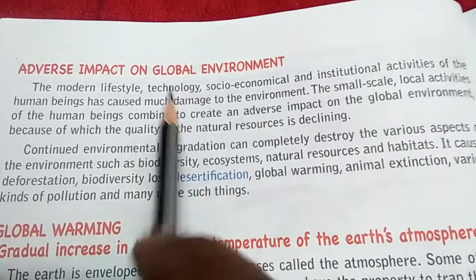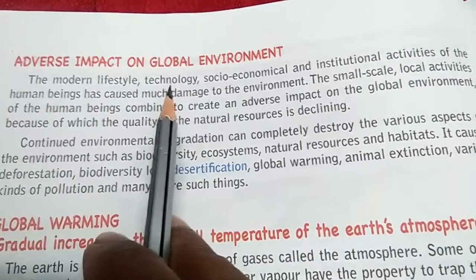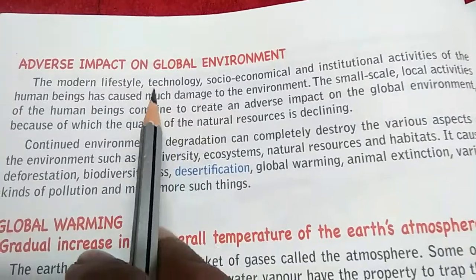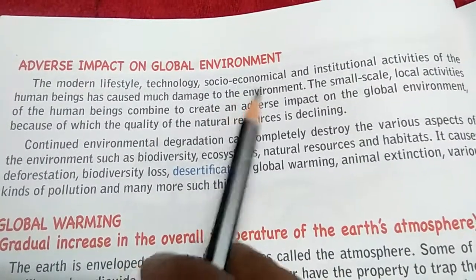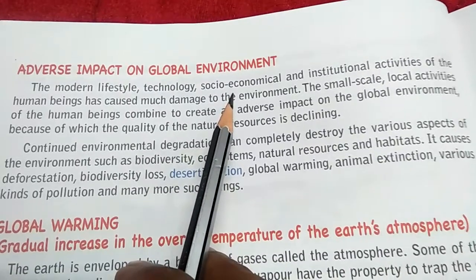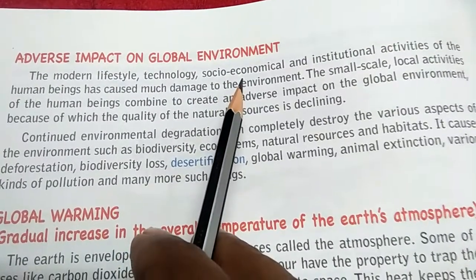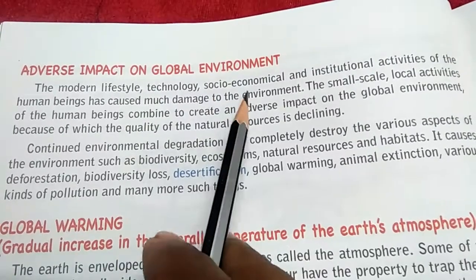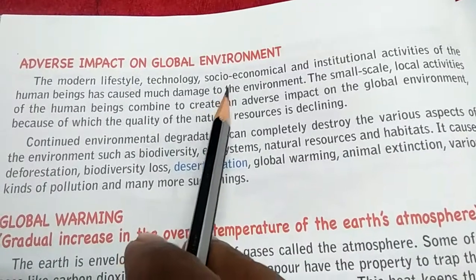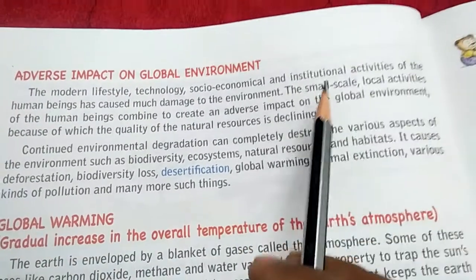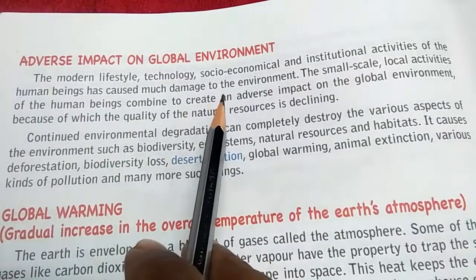So what has caused damage to the environment? Modern lifestyle and technology — for example, using air conditioning or a refrigerator, which are technologies that are also harmful to the environment. We will see how when we get to global warming. Then socioeconomic factors: in society, generally because of status — my neighbor has an air conditioner so I should also have one, my neighbor has a car so I should also have a car — a race in society, without caring that these things can harm the environment. And institutional activities: many industries and factories have been set up with different activities, all of which lead to damage of the environment.